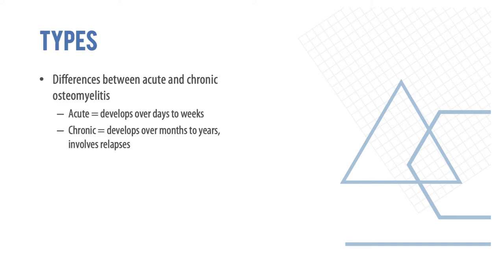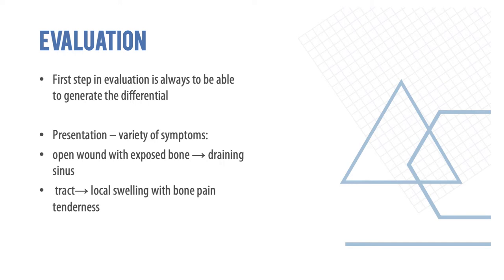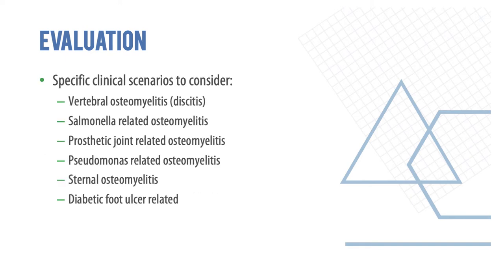Acute versus chronic is probably not an important distinction in the ED except to know that a chronic infection that appears healed can relapse. Acute osteomyelitis develops over days to weeks, whereas chronic develops over months to years and involves relapses. In terms of presentation, an open wound with exposed bone and a draining sinus is a clear-cut indication of chronic osteomyelitis, usually associated with local swelling, bone pain, and tenderness.